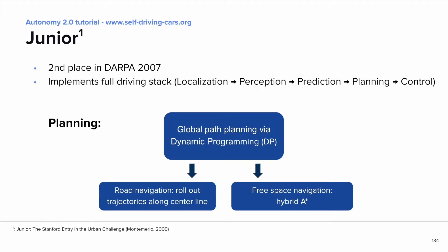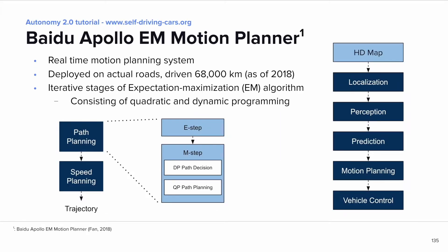The first work is Junior, a second-place submission to DARPA 2007. It implements a full driving stack — from localization to perception, prediction, planning, and finally control. On a global layer, they use dynamic programming to calculate the cost for certain points on the map. Then, a layer below, they use two approaches depending on the scenario: for road navigation, they roll out trajectories along lane centerlines picking the one with the lowest accumulated cost; for free space navigation, they use a hybrid A-star approach. Baidu's EM Motion Planner is another example, also implementing the full driving stack. It highlights the usage of an HD map, which is an important input to planning. The planner was deployed on actual roads driving nearly 70,000 kilometers as of 2018, using iterative stages of the expectation-maximization algorithm with quadratic and dynamic programming.